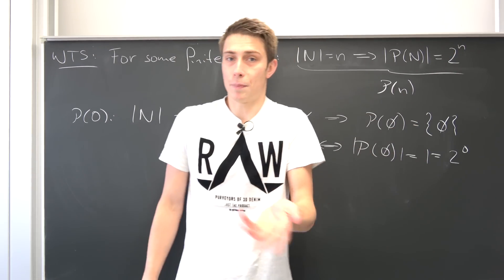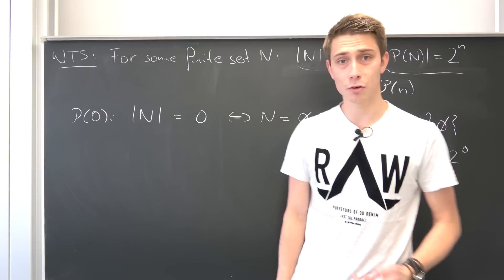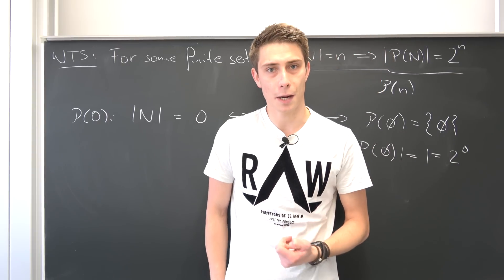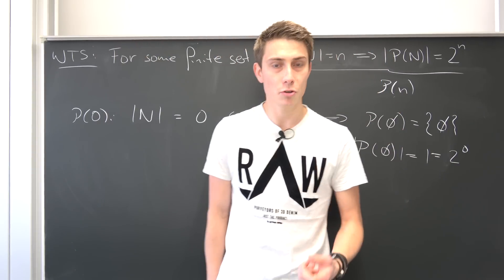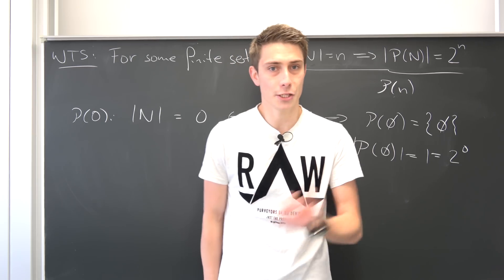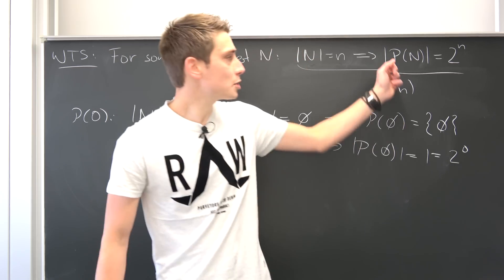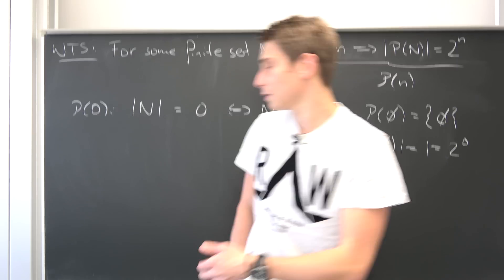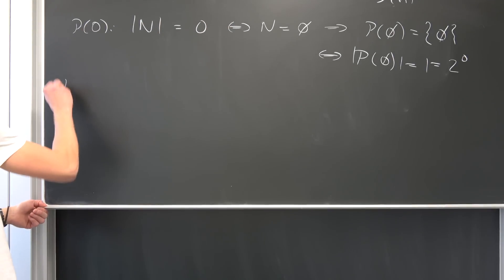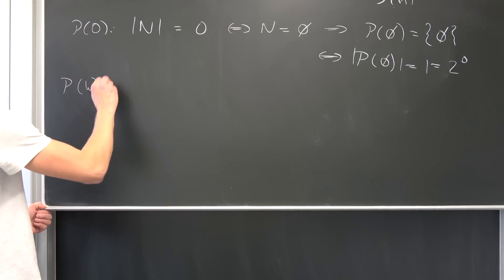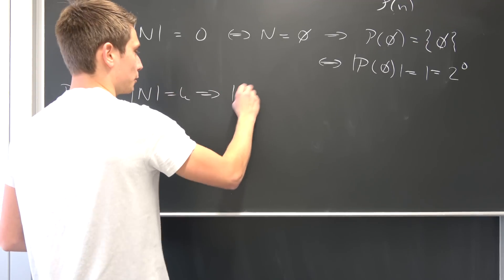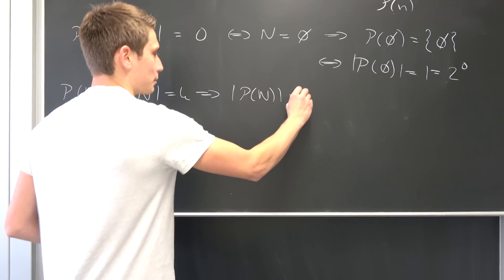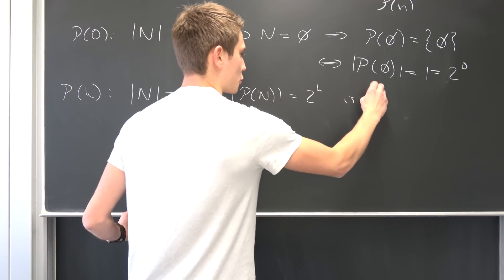But you see, the base step holds now. And now we are going to formulate our induction hypothesis. It's basically just this but with a K plugged in. We are going to assume that for some random arbitrary natural number K, this proposition right here holds. Let's assume P of K, which is nothing but cardinality of N is nothing but K implies that the cardinality of the power set of N is nothing but 2 to the Kth power is true.